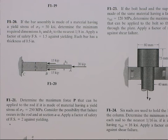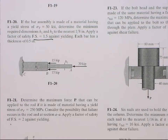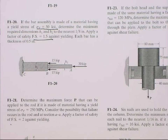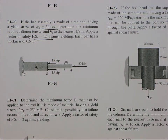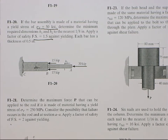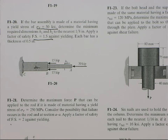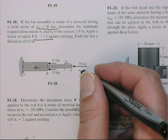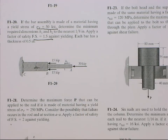This is going to be another one with a factor of safety. We have a factor of safety 1.5 against yielding. It gives you the yield stress of the material as 50 KSI. If you don't know about factor of safety and yield stress, look at problem 119 — I discuss it there.